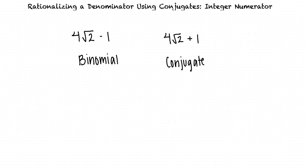What are conjugates? A conjugate is a binomial formed by negating the second term of the binomial. For example, say we're given the expression 4√2 - 1. The conjugate of this binomial would be 4√2 + 1.